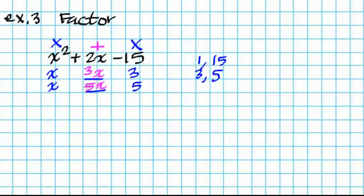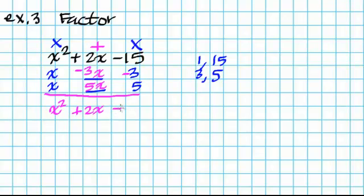I need these two to add up to a positive 2x. So in order to get positive 2x, I would have to make the 3x into a negative. Since I make this 3x negative, I make the number to the right of it negative as well. When I check: x times x gives me x squared, negative 3x plus 5x gives me positive 2x, and negative 3 times 5 is negative 15. This is exactly the same.